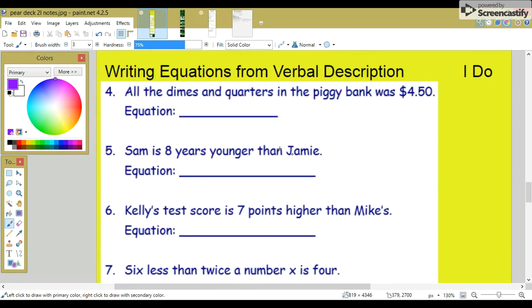Writing equations for verbal descriptions. Four: All the dimes and quarters in a piggy bank was $4.50. Let's call dimes d and call quarters q. Dimes are worth ten cents, so ten cents per dime.